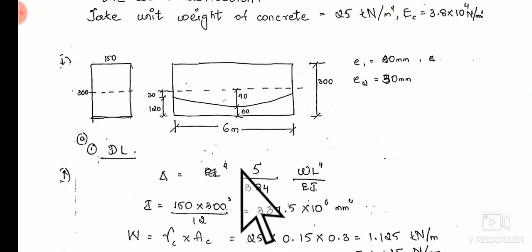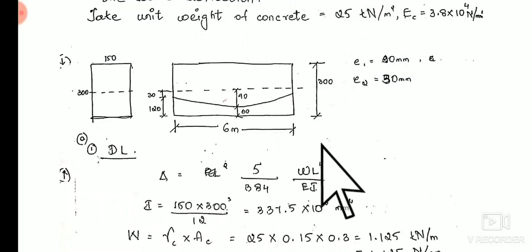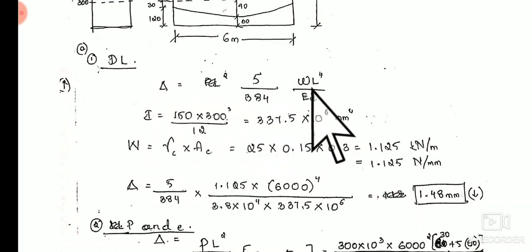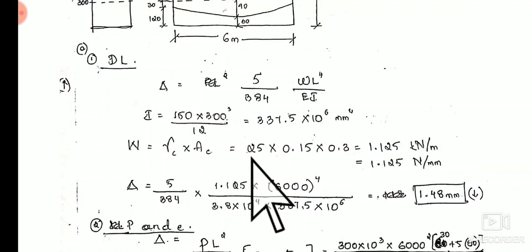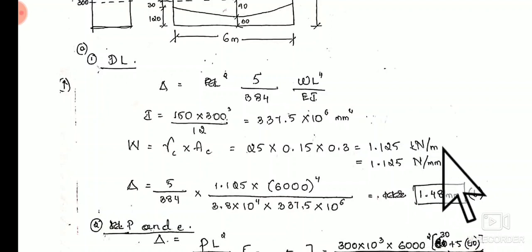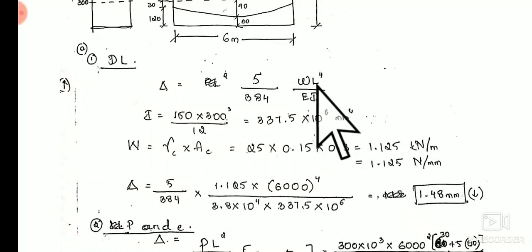In this problem, we are told to calculate the deflection due to dead load and the deflection due to P and E. First, we shall compute the deflection due to dead load. The deflection formula is 5/384 × WL⁴ / EI. W is equal to the density of concrete times the cross-sectional area: 25 × 0.15 × 0.3, giving W = 1.125 kN/m. The span is 6 m, i.e., 6000 mm.